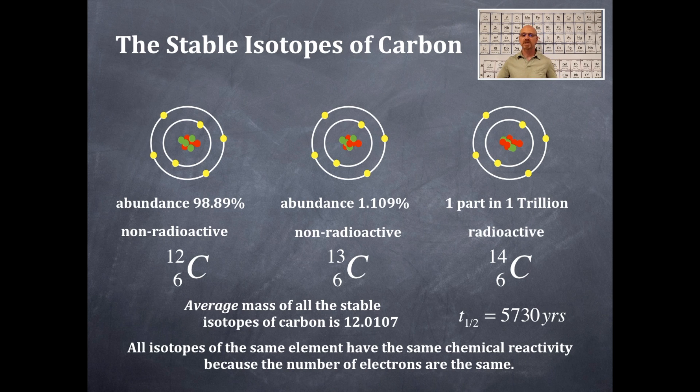On your periodic table, it might be 12.011 or 12.01, depending on your periodic table that you have. But that is the number that's on the periodic table. That's that decimal number. That is the average atomic mass of all the naturally occurring isotopes of carbon, or any element of that particular element. That's why they're decimal numbers.